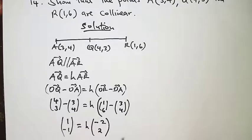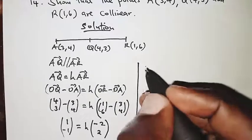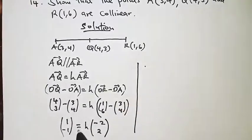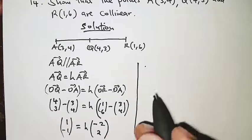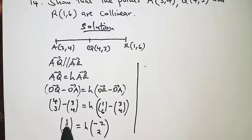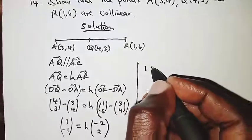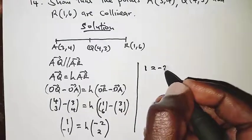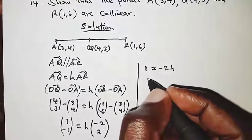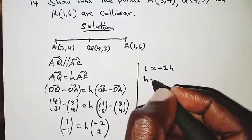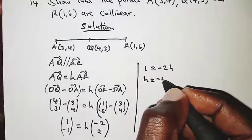From here we can see that 1 is equal to -2h. So you can use the first line or the second row, whichever. One of them is just enough, so we're going to have 1 is equal to -2h, and for this particular case, h is equal to negative a half.